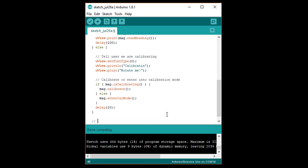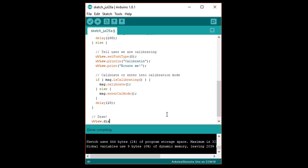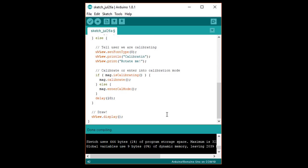Finally, write uview dot display to show the heading or calibration message and make sure loop is closed with a curly brace. Upload this to your microview.